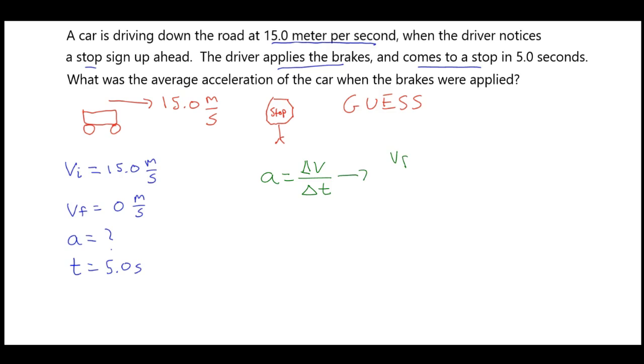In this case, the change in velocity is going to be the final velocity minus the initial velocity, and the period of time is just going to be the time that we're given, which in this case was 5 seconds. So, again, it's really the same equation. It just looks different.